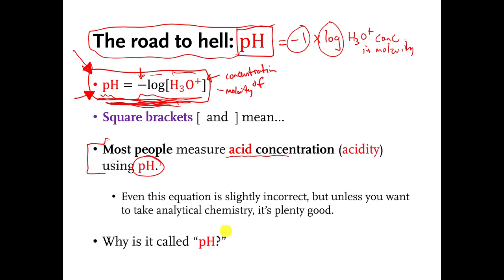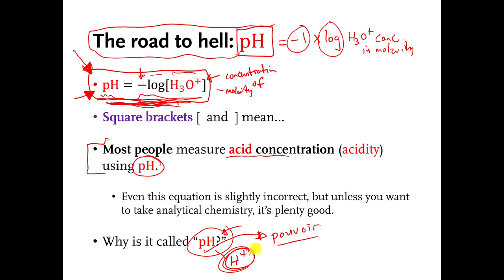In case you're curious why it's called pH: the H stands for the H plus donated from the acid. The P historically stood for the French word for power — 'pouvoir' — meaning how powerful the H pluses are in your liquid. These days students are often told P stands for 'potential.' That's why it's written as a lowercase p and a capital H.